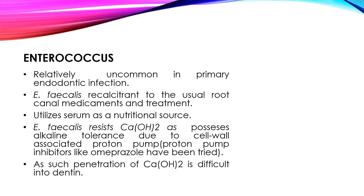If there is an alkaline pH, the proton pump is able to pump hydrogen ions into the canal, resulting in maintenance of the intracellular pH. Moreover, E. faecalis is able to penetrate into the dentinal tubules, and hence calcium hydroxide cannot reach those areas to kill these microorganisms. That is why E. faecalis is also known as the 'persistent persister.'